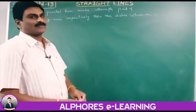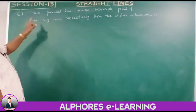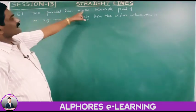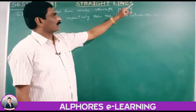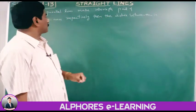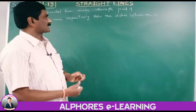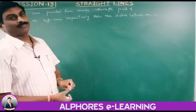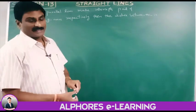Sixth problem: if two parallel lines make intercepts P and Q on the x and y axes respectively, find the distance between them.